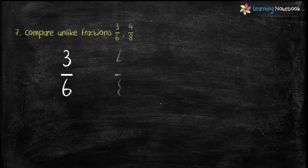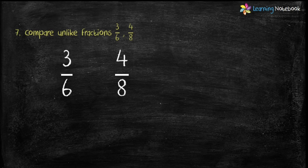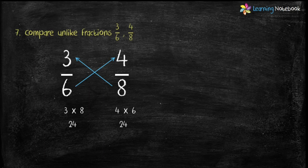Let's do one more question. Compare unlike Fractions 3 by 6 and 4 by 8. The denominators are different, so we will use cross multiplication technique. Let's do 3 into 8 and 4 into 6. 3 into 8 equals 24 and 4 into 6 also equals 24. It means both these Fractions are equal. Therefore, 3 by 6 equals 4 by 8.